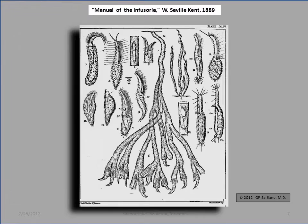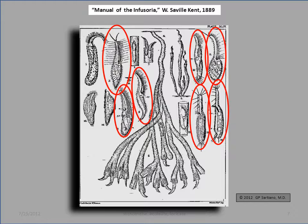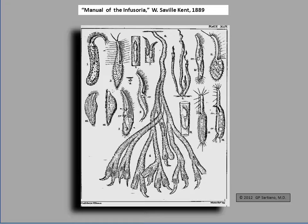This multi-diagrammatic plate from Saville Kent's Manual of the Infusoria from 1889 shows a number of the observed forms of Stichotrica. It illustrates a number of examples of different species of Stichotrica not sheathed within a lorica. On the other hand, it also beautifully illustrates the loricate form of Stichotrica, including one in a single tube.